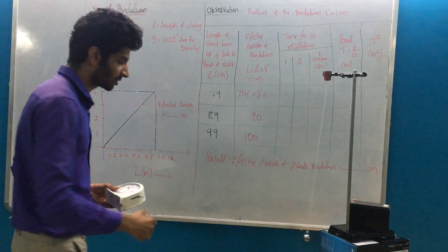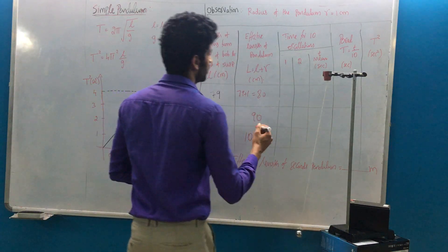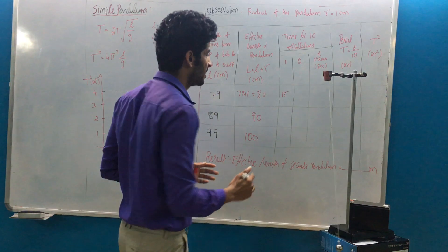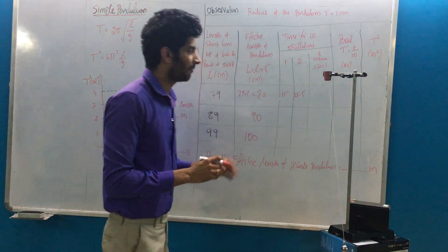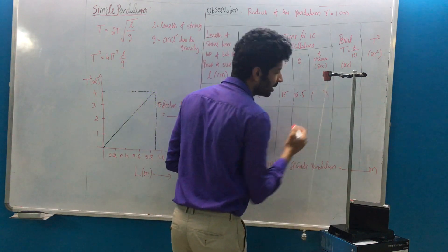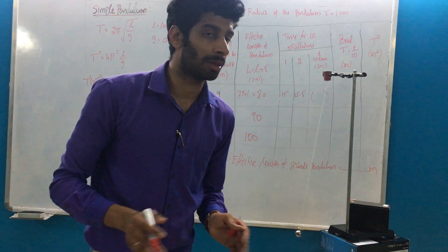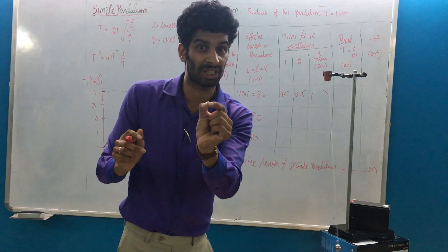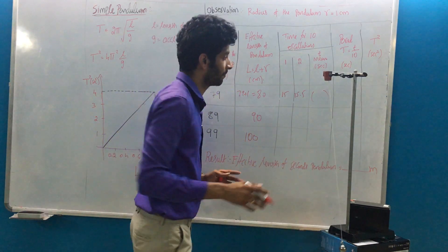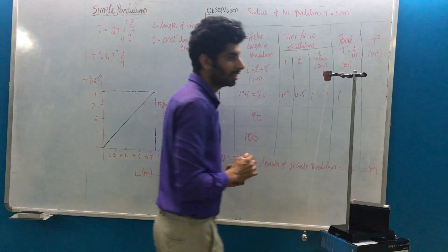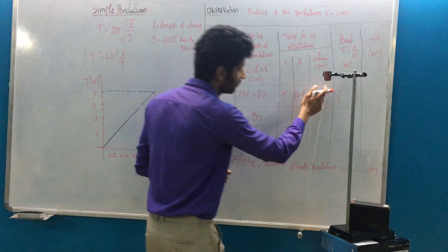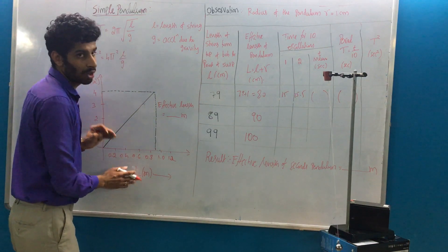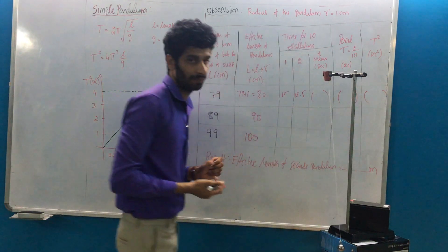The time taken for ten oscillations is 15 seconds for the 79 cm trial. One more trial I have to do again for ten oscillations, it may be 15.5 for example. Then take the mean of these two. This is time taken for ten oscillations. If you want to know the time period for one oscillation, you have to divide by ten. We need T square, so you have to square that value.